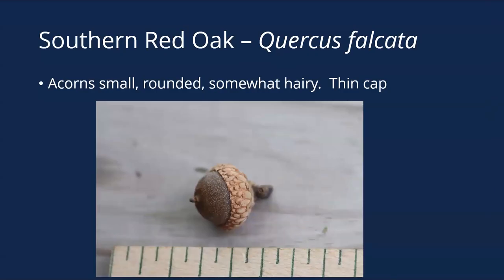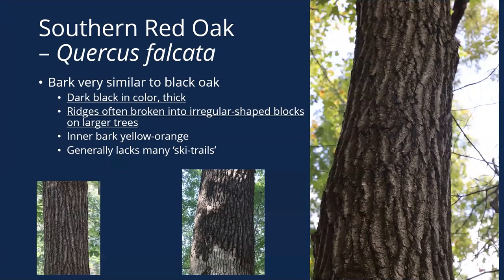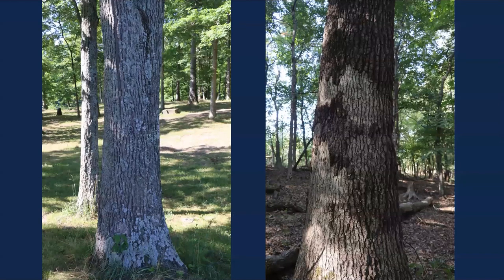The acorns are small, rounded, somewhat hairy with a thin cap — honestly it looks like many other red oak acorns. The bark can be quite difficult to tell apart from black oak, and a lot of times if all I'm looking at is the bark I can't tell them apart. It has a kind of yellow-orange inner bark, maybe not quite as bright orange as black oak. So a lot of times I struggle telling these apart without leaves between black oak and southern red oak in the southern third of the state where they overlap.